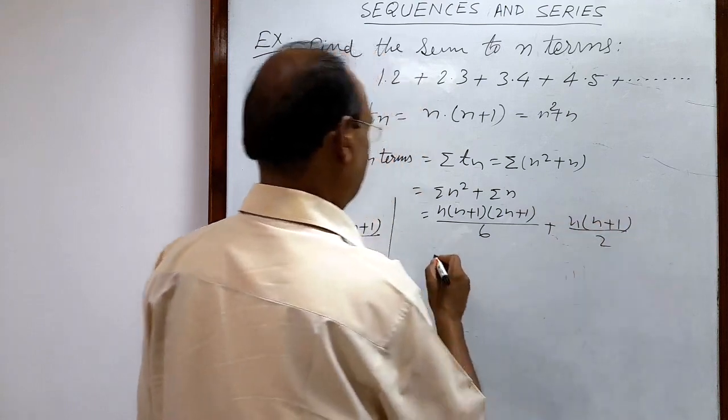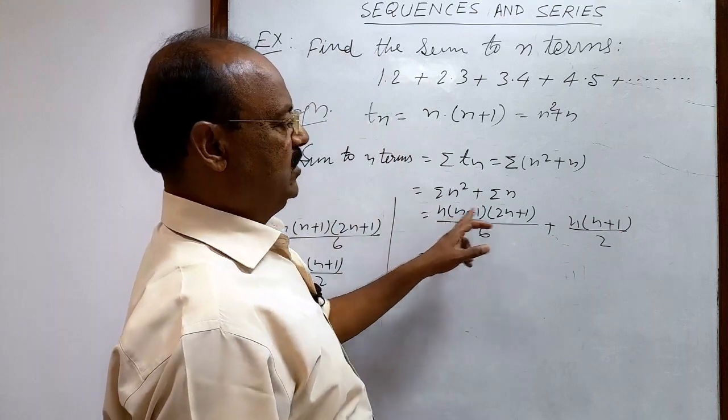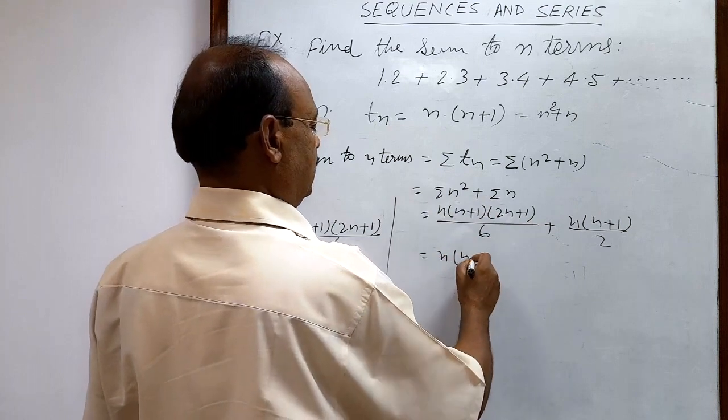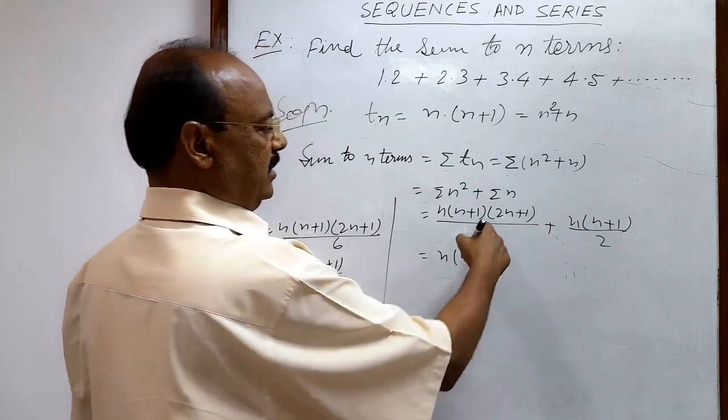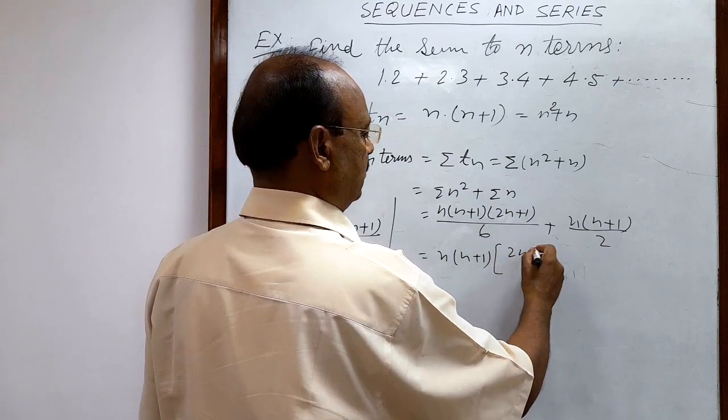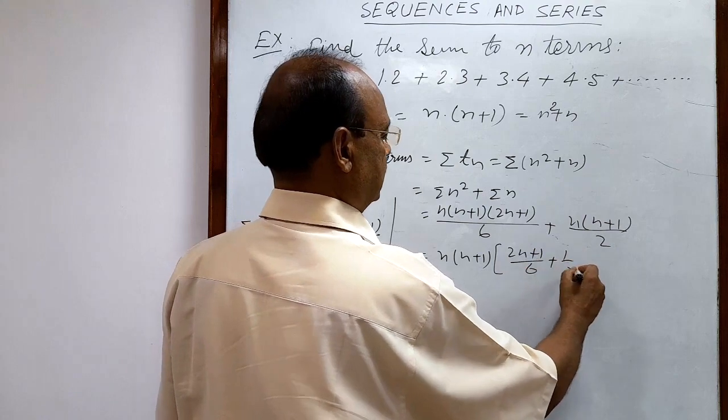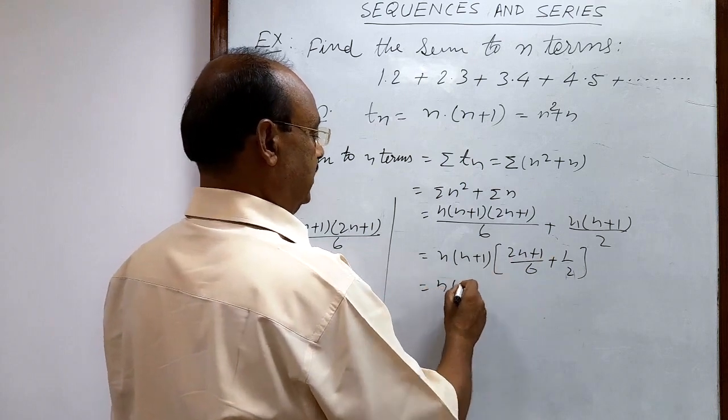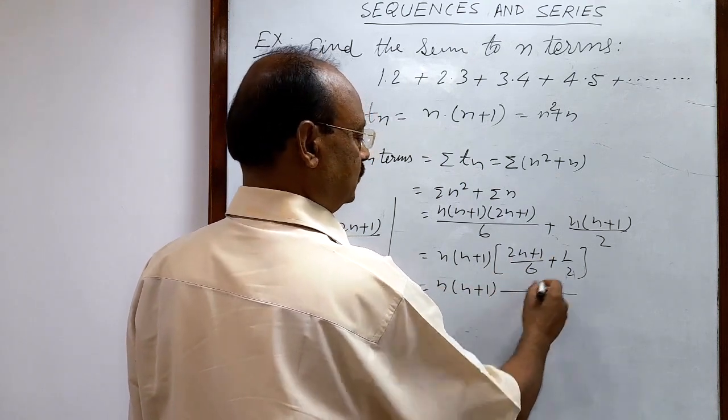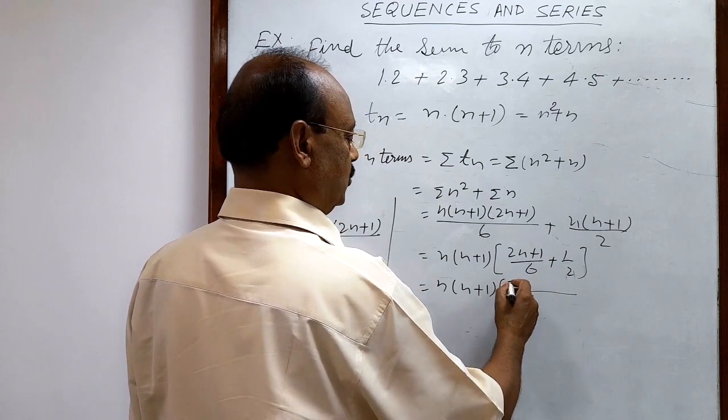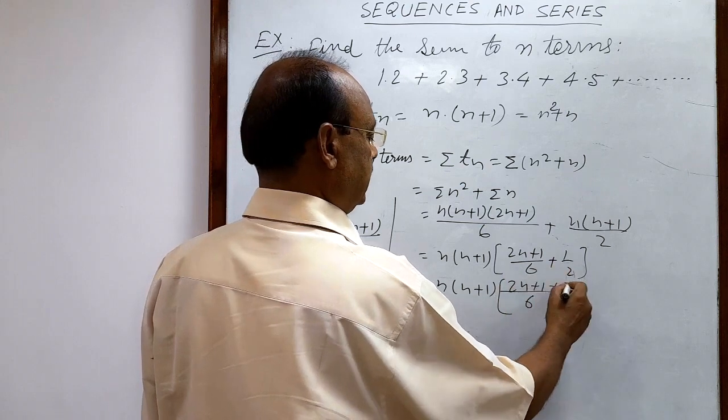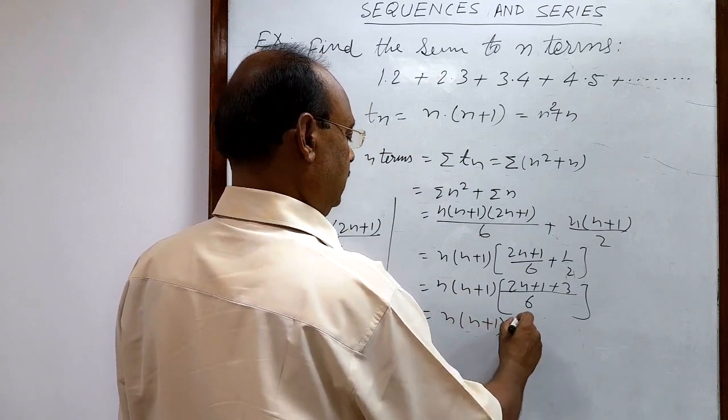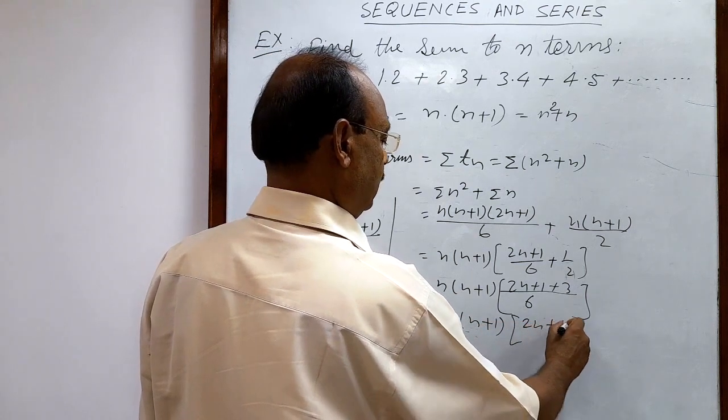Here n(n+1) is common in both terms, so n(n+1) is factored out. The remaining part is (2n+1)/6 and 1/2. Let us simplify this expression inside the bracket to get the result. This is n(n+1). The LCM is 6, so we get (2n+1)/6 plus 3/6.